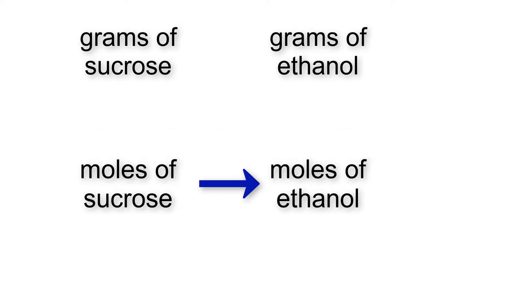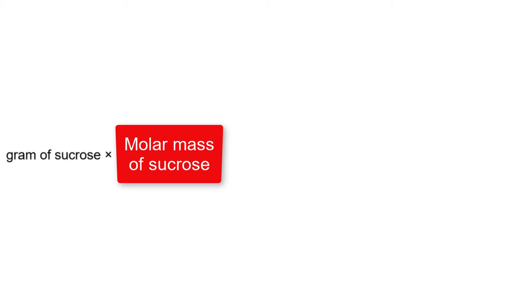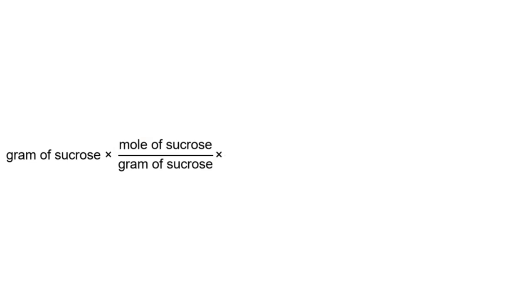You then need to ask yourself: how do we go from grams to moles or moles to grams? For this, we are going to use our molar mass of sucrose and the molar mass of ethanol. When you are writing this out, start with only the units. We start with grams of sucrose and we want to get into moles of sucrose. If you wrote out your next step as moles of sucrose divided by grams of sucrose, you are correct. As you can see, grams of sucrose will cancel out with each other and we are left with moles of sucrose.